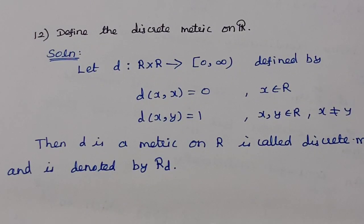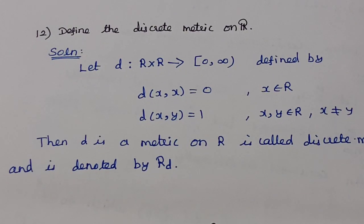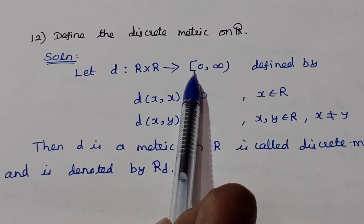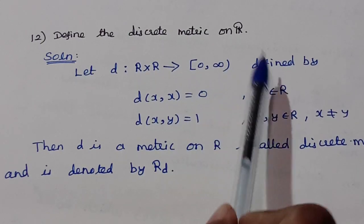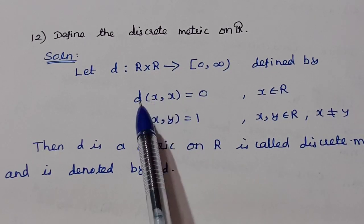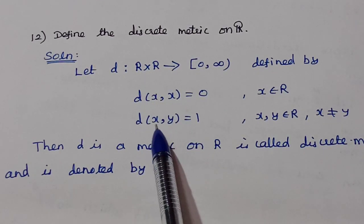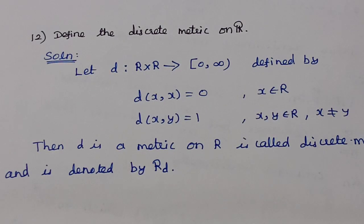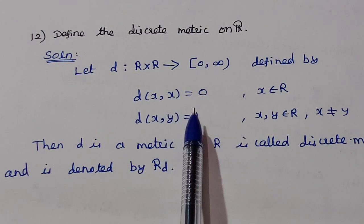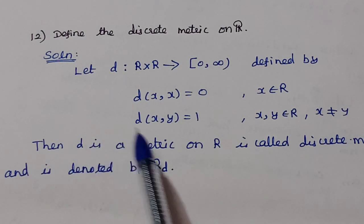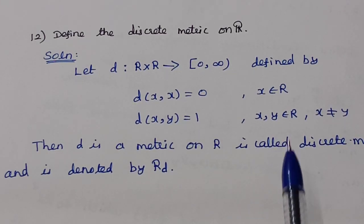Define the discrete metric on ℝ. We define a distance function d: ℝ × ℝ → [0, ∞) by d(x, x) = 0 (distance between same points is 0) and d(x, y) = 1 when x ≠ y (distance between distinct points is 1). Then d is a metric on ℝ called the discrete metric.